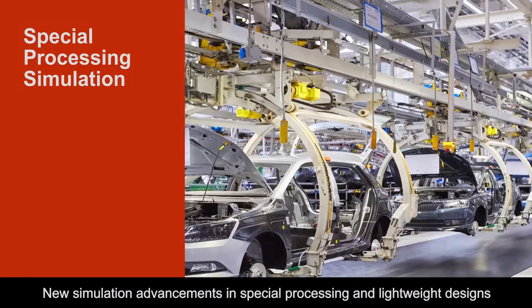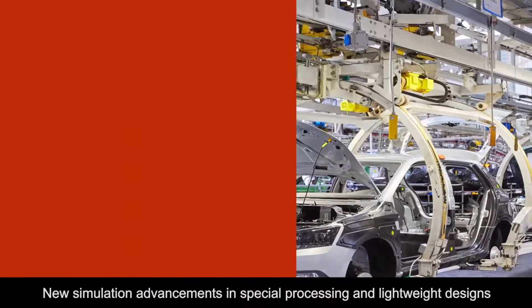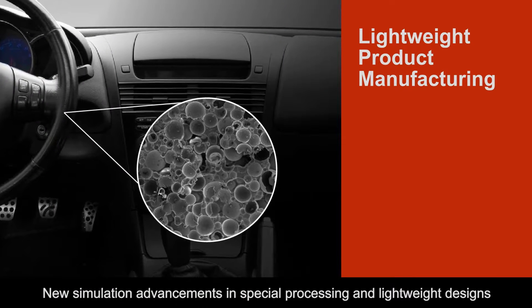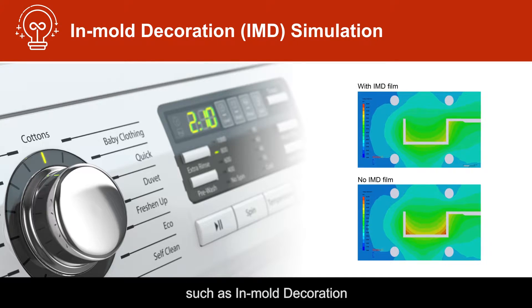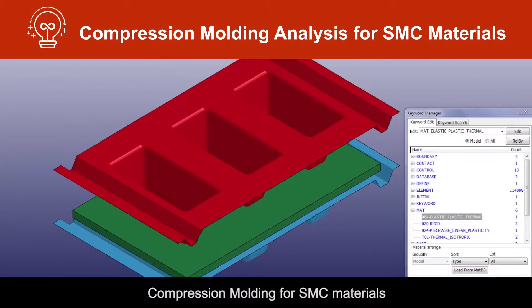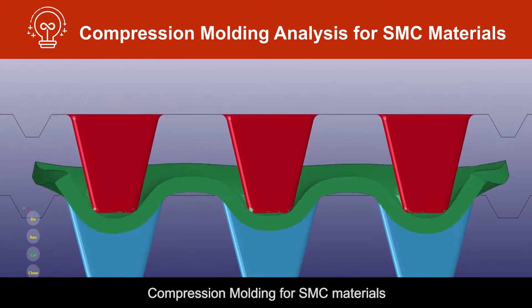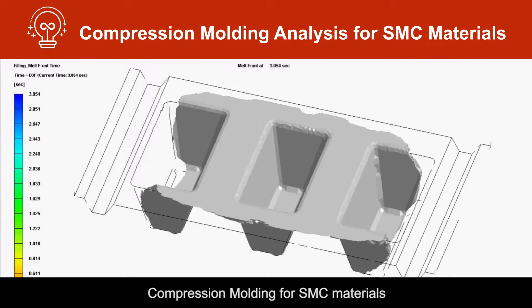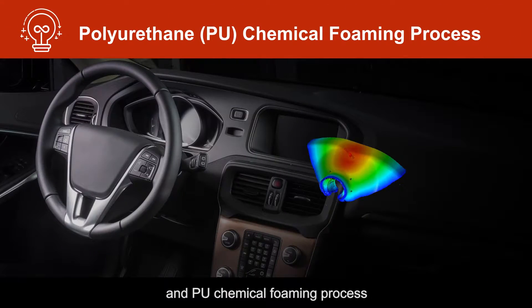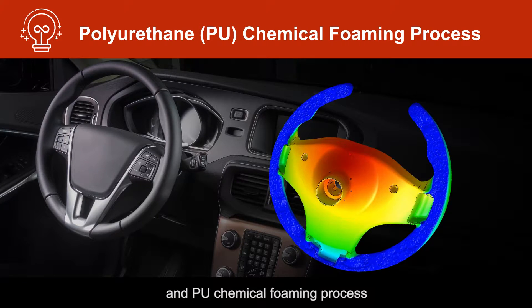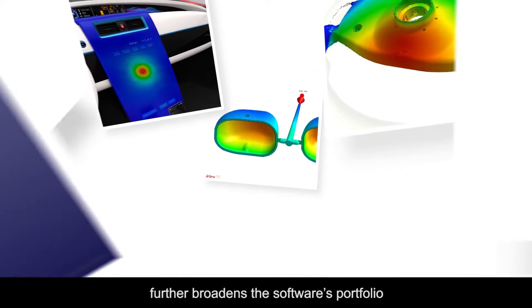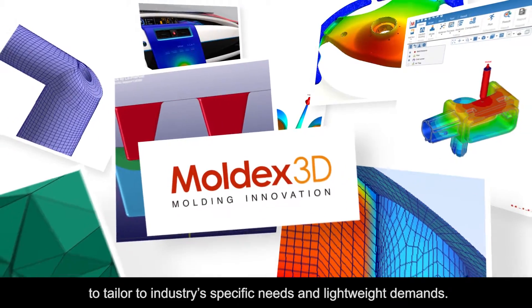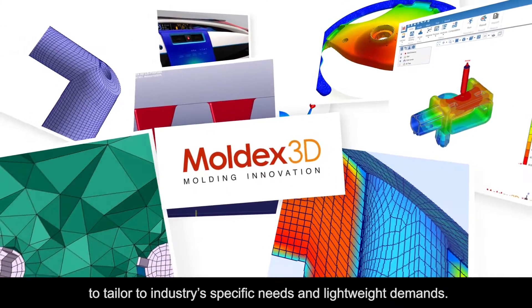New simulation advancements in special processing and lightweight designs — such as in-mold decoration, compression molding for SNC materials, and the PU chemical foaming process — further broaden the software's portfolio to tailor to industry-specific needs and lightweight demands.